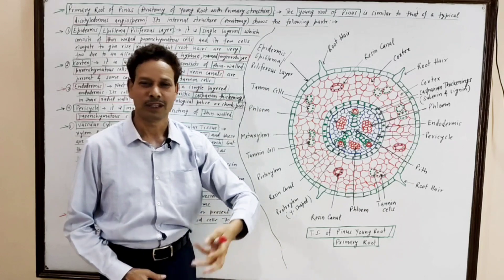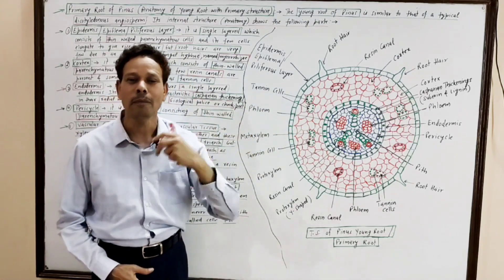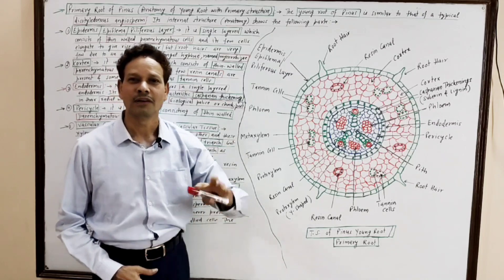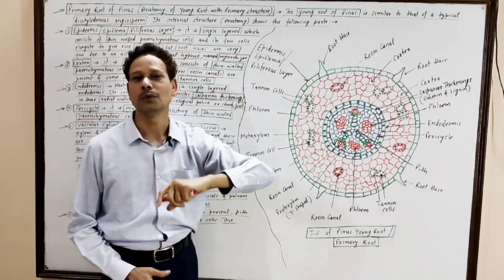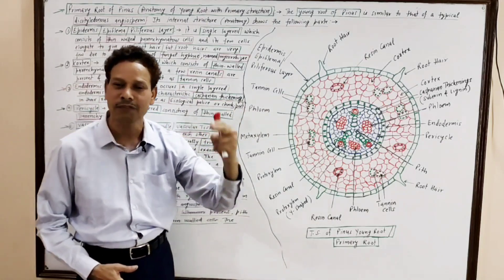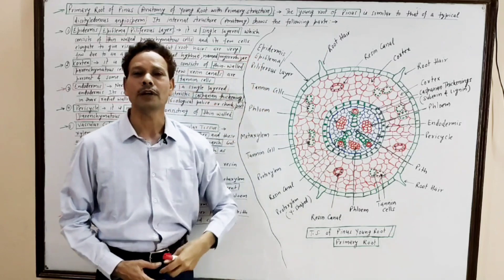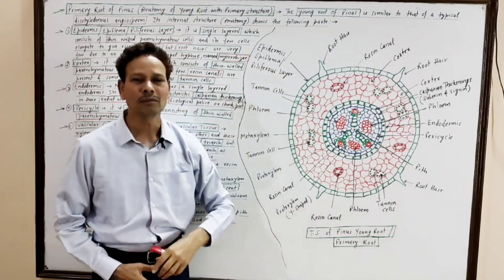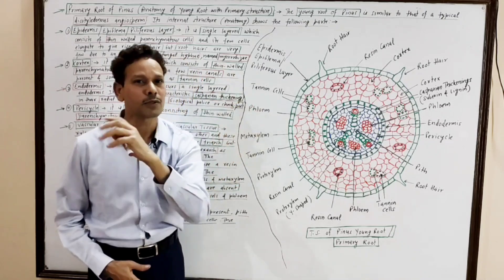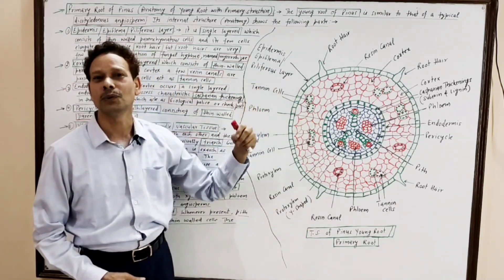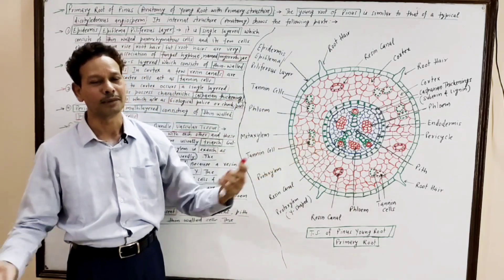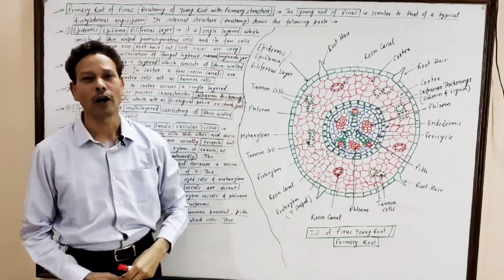Generally, in Pinus, the root hairs are poorly developed. A few root hairs exist because they are replaced by fungal association — fungal hyphae associate with Pinus roots and produce mycorrhizae. The fungal hyphae absorb water and minerals, while the plant body provides nourishment and organic matter to the fungal hyphae. This is a symbiotic association between the fungus and Pinus root. The fungal hyphae also provide an antimicrobial environment. This epidermis or pileiferous layer consists of thin-walled parenchymatous cells.